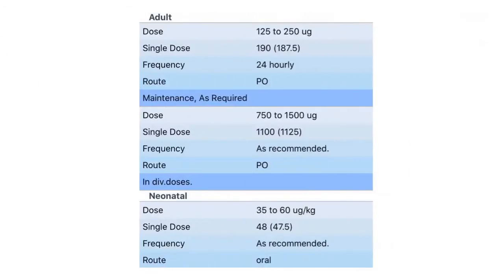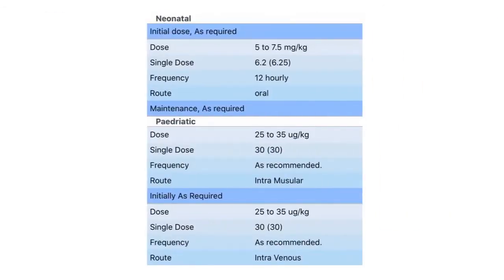Dosage — Adult dose: 125 to 250 micrograms, frequency 24 hourly, route oral. Neonatal dose: 35 to 60 micrograms per kilogram. Pediatric dose: 25 to 35 micrograms per kilogram, routes IV, IM, and oral.